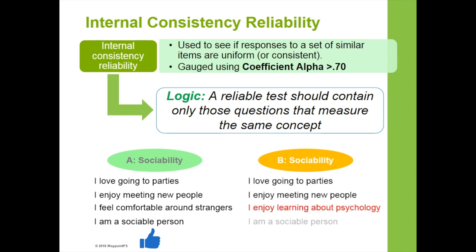In the second assessment, the first, second, and fourth items are the same, but the third item says 'I enjoy learning about psychology.' A person who is high on sociability may or may not enjoy learning about psychology. So that third item will tend to decrease the reliability for the second assessment.